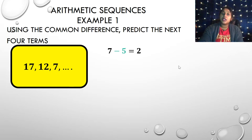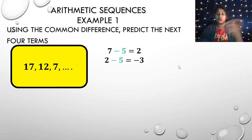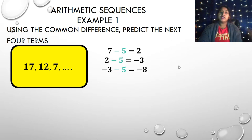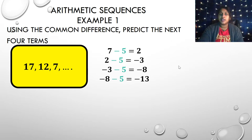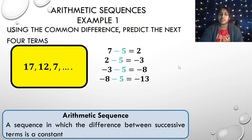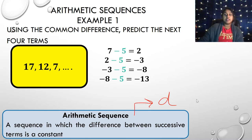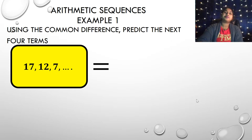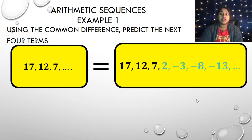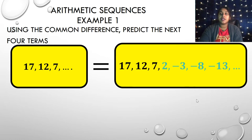To predict the next four terms, I take 7 minus 5 to get 2, then 2 minus 5 is negative 3, negative 3 minus 5 is negative 8, and negative 8 minus 5 is negative 13. An arithmetic sequence is one where the difference between successive terms is a constant — that D value, the common difference.